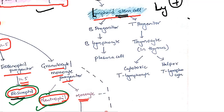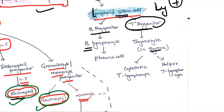This lymphoid stem cell in bone marrow gives rise to B progenitor and T progenitor. They respectively give rise to B lymphocytes. And this T progenitor goes to the thymus and differentiates into cytotoxic T lymphocytes and helper T lymphocytes.